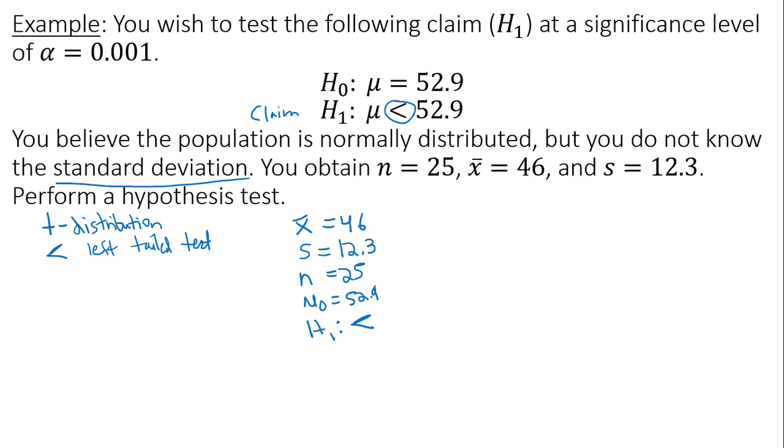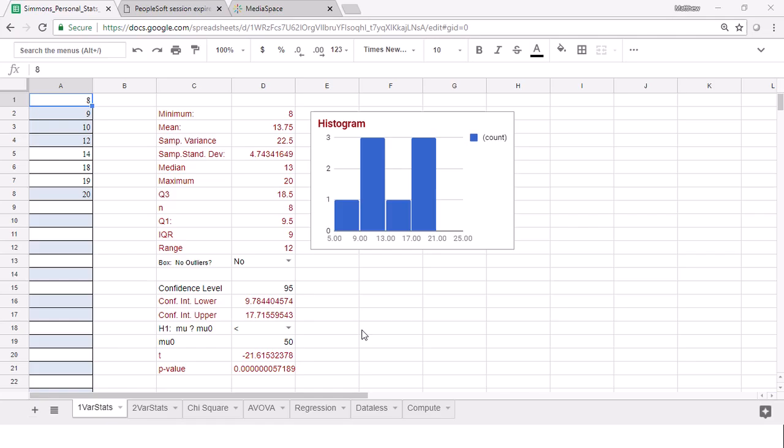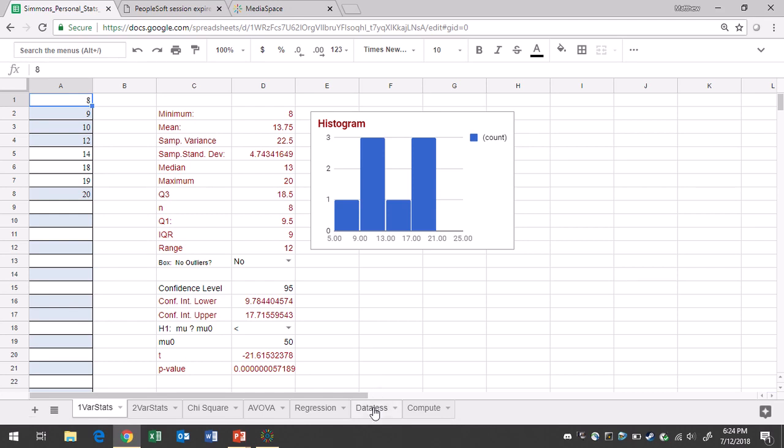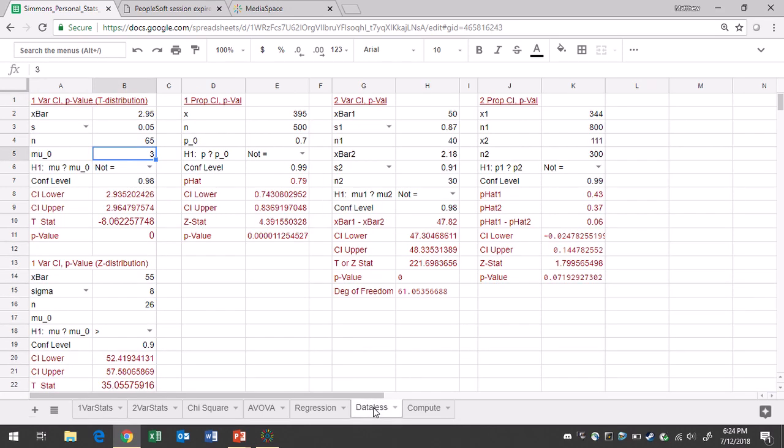So we're going to go to Google Sheets and type this information in. You'll go to the data list tab, and make sure you go to the t distribution region, since we don't know the population standard deviation.